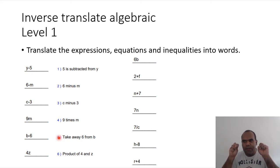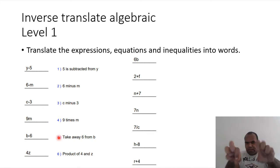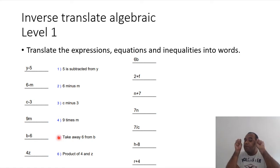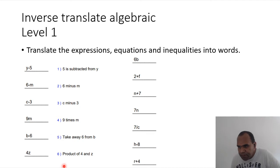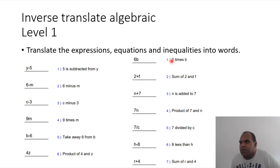The turn-around phrase idea: b first, then six after — 'take away six from b.' For 4z: 'product of four and z.' Great, easy! The next one is 'six times b' and '2 plus f.'